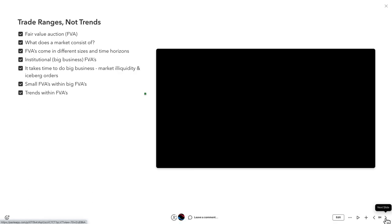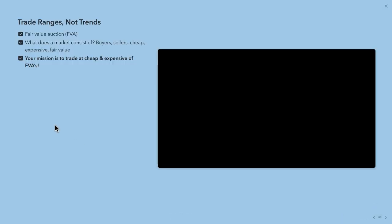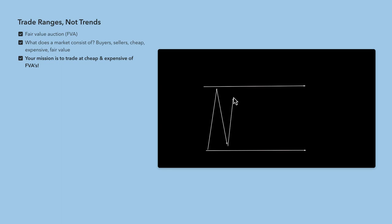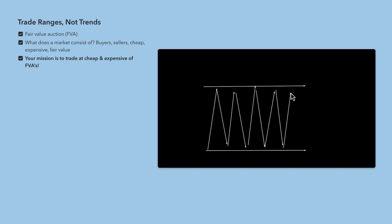Let's get into trading ranges, not trends. Fair value auctions — what are they? Basically, fair value auctions are ranges. A range is known to everybody as prices not basically trending on a price chart — prices are just within a certain high and a certain low. It's really important to understand that you call whatever you're interacting with by its proper name.